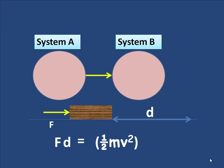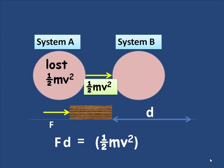So what this means is the work done is half MV squared. The system lost half MV squared, and system B gained one-half MV squared. Now, I would suggest you hit pause and just go over that.